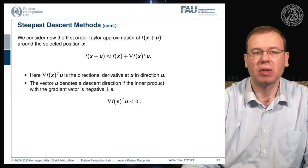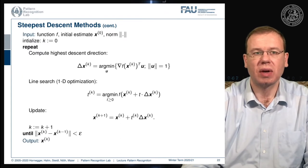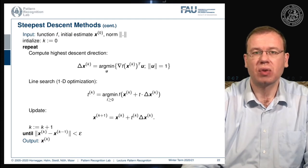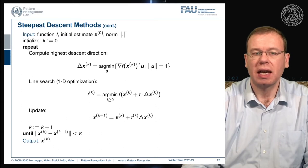The vector u denotes a descent direction if its inner product with the gradient vector is negative, i.e., less than zero. This gives rise to a new steepest descent method: we have the function, an initial estimate, and a norm. We initialize k to zero, compute the update direction as the steepest descent according to our norm, perform a 1D line search, update x, and iterate until convergence.